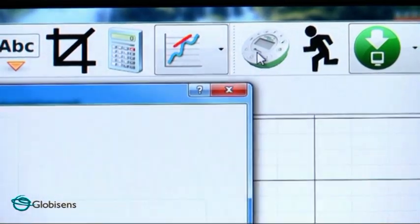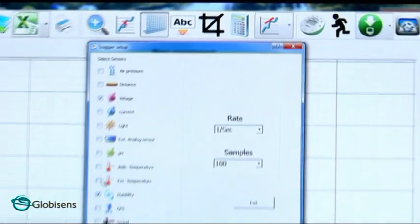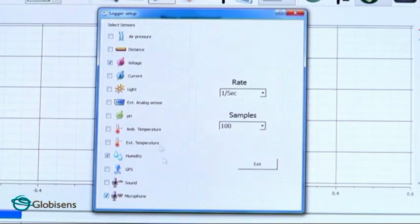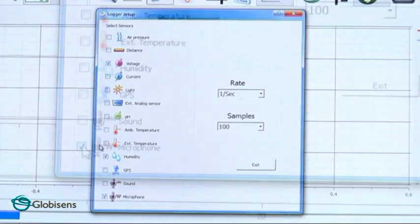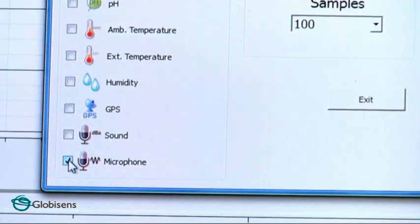The Bluetooth icon here shows that we are wirelessly connected to the lab disc. We will open the setup screen. Here we can see all our sensors. Look how many we have in a single lab disc. We will select the microphone.